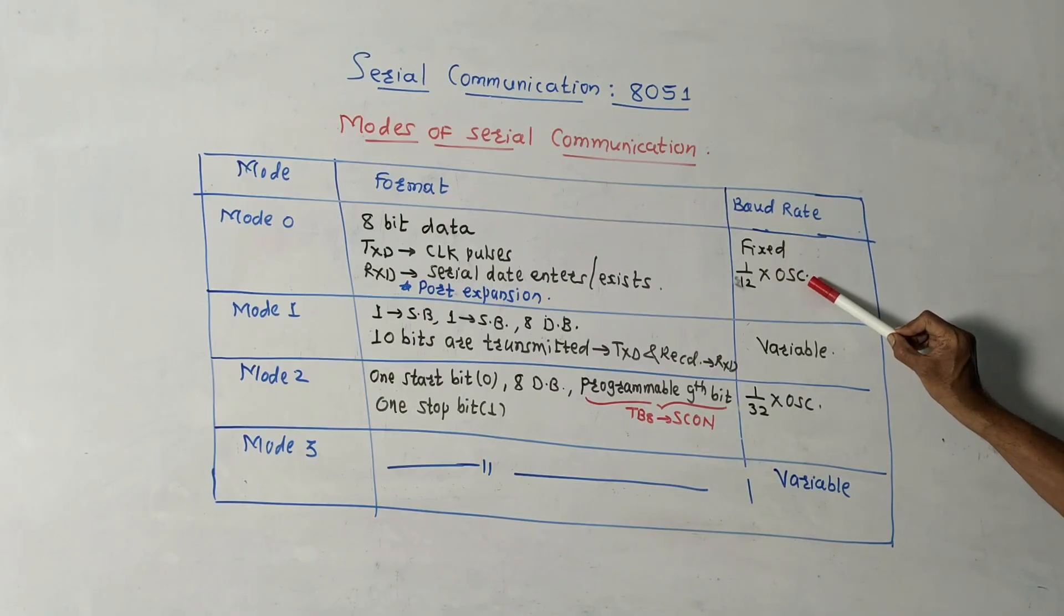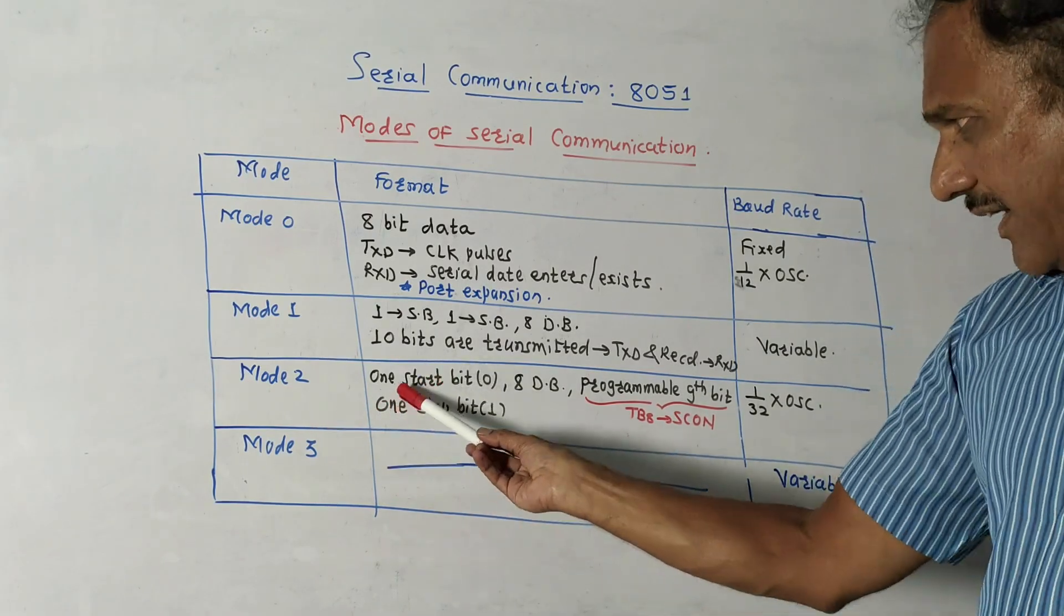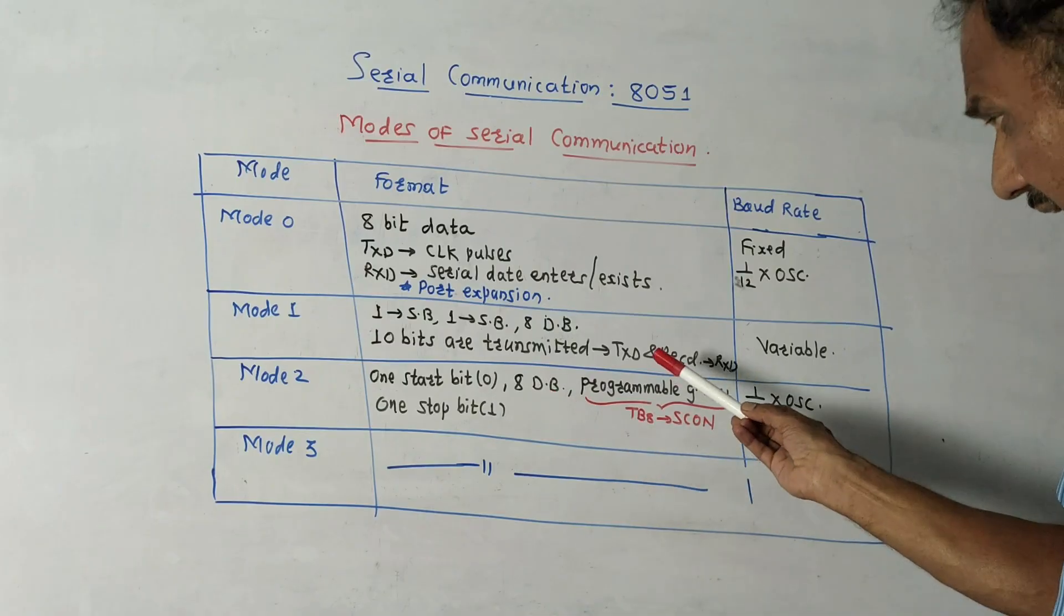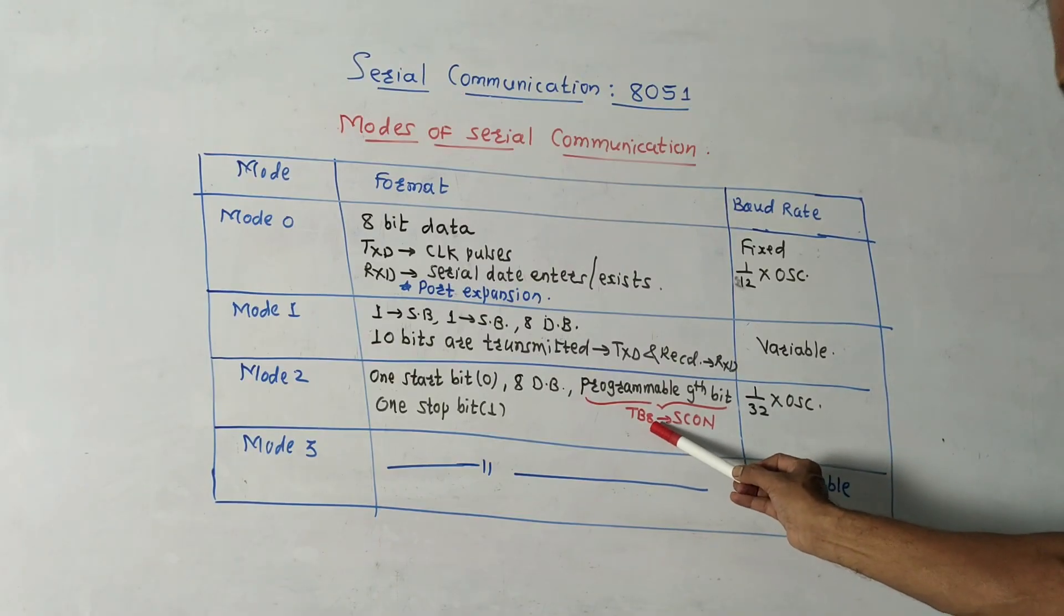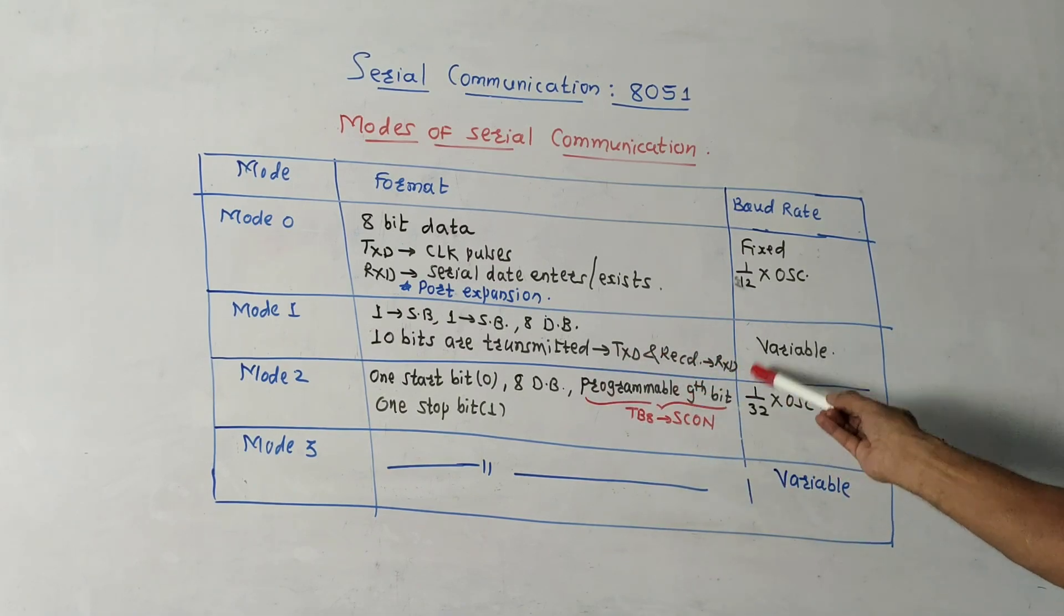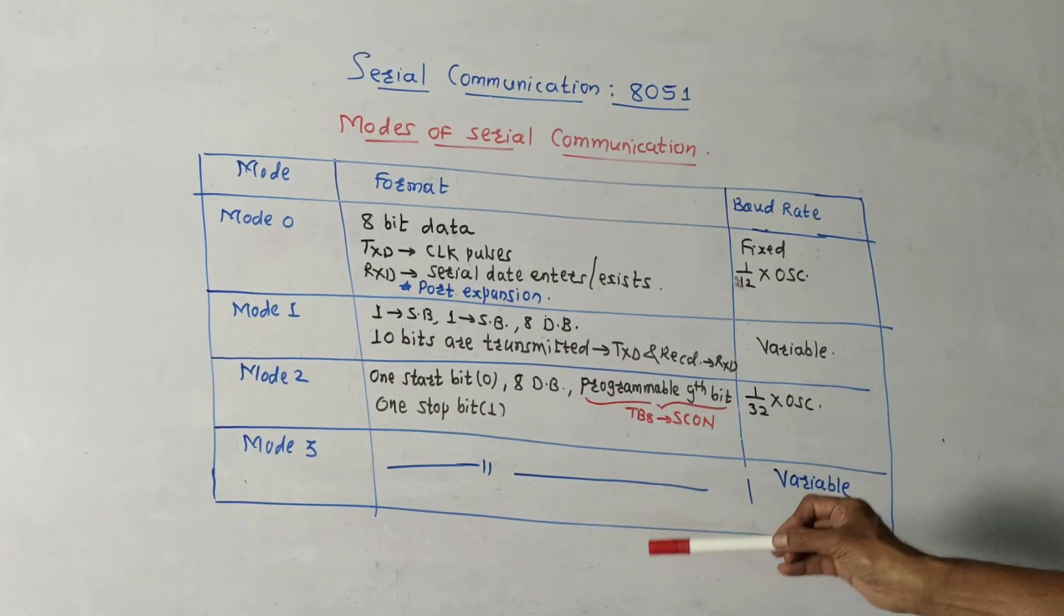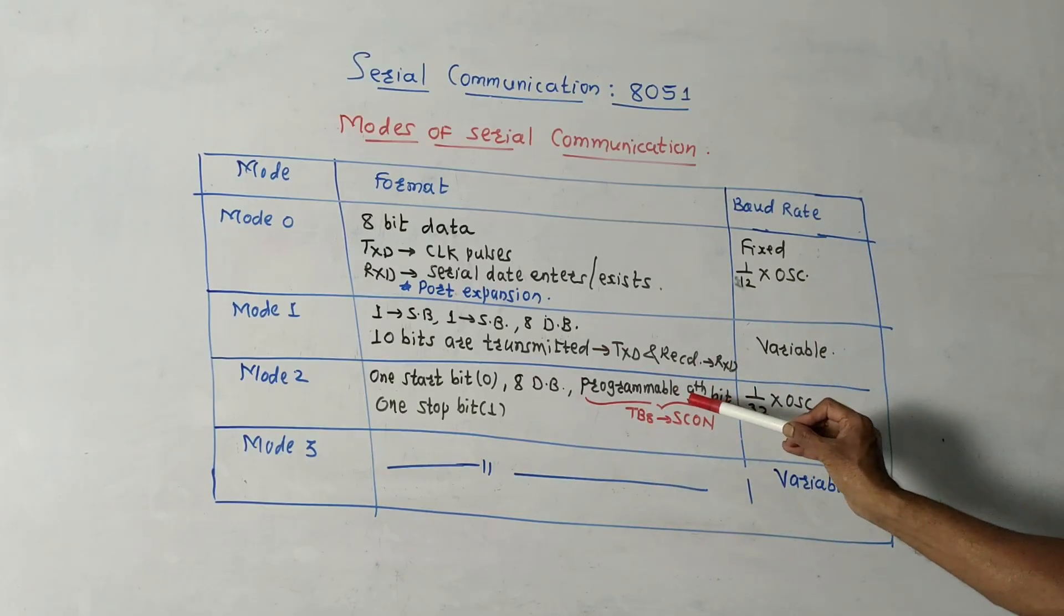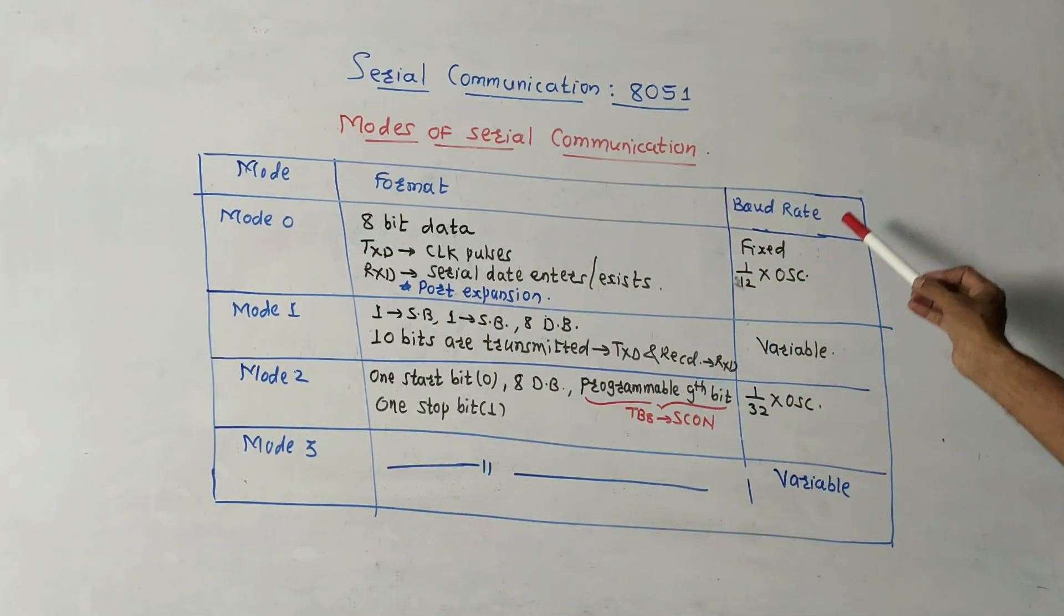Next is mode 2. It requires one start bit, usually it is 0, then eight data bits. DB is data bits. Ninth bit is programmable bit. We have discussed this TB8 bit of SCON register, that is serial control register. It is related to the ninth programmable bit and one stop bit. So this is the combination of bits related to mode 2. One start bit, one stop bit, eight data bits, and one programmable bit. So there are total 11 bits as far as mode 2 is concerned. And the baud rate for mode 2 is 1 by 32 times oscillator frequency.